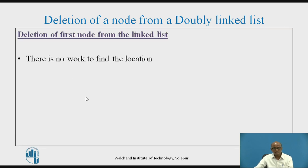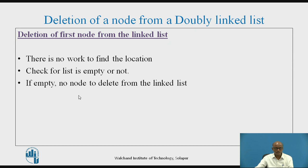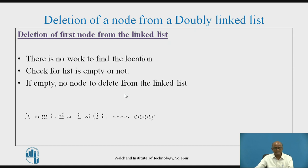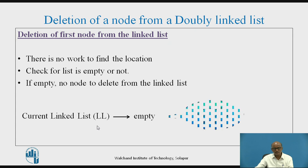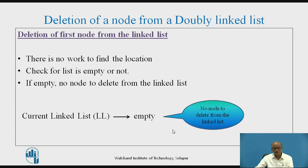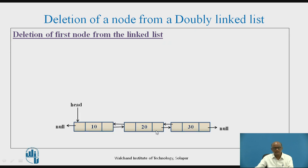First of all, check whether the list is empty or not. If it is empty, we display that there are no nodes, so deletion is not possible. If the current linked list is empty, no node can be deleted from the list.